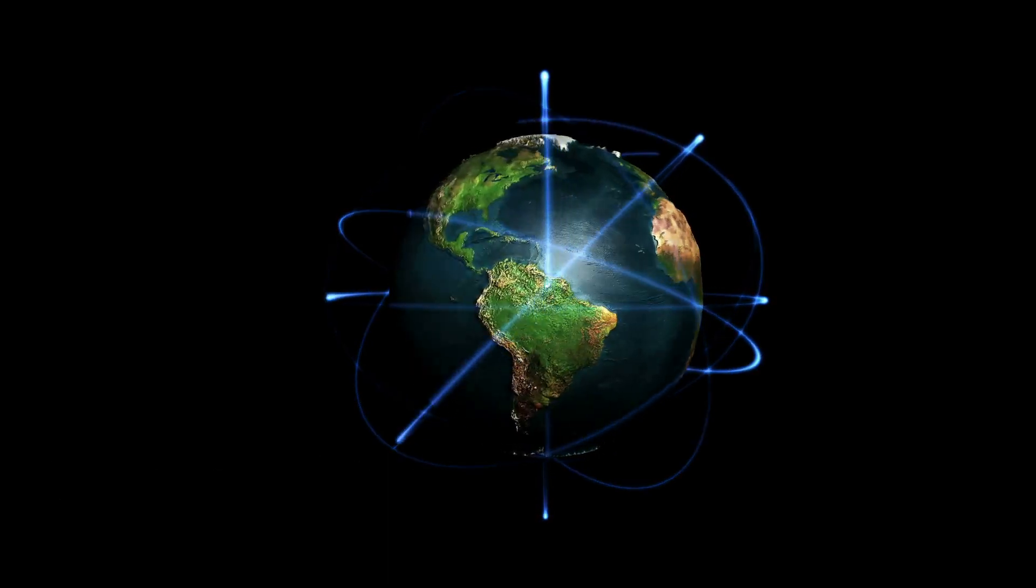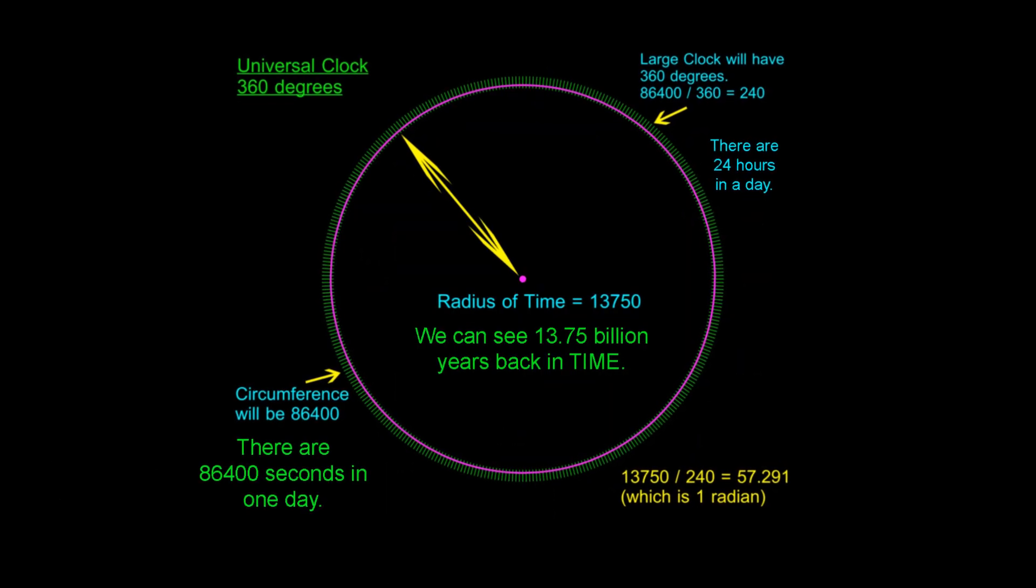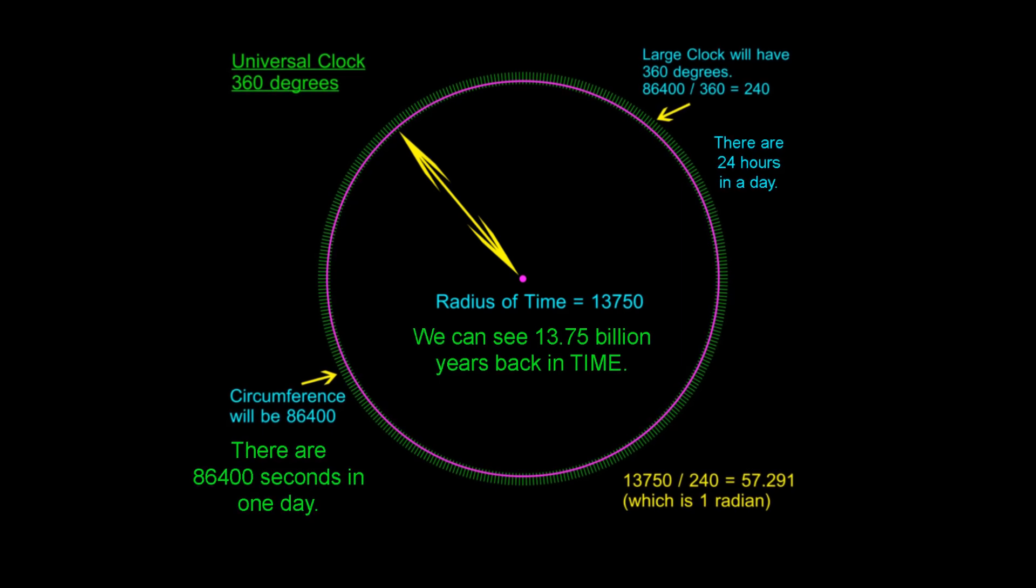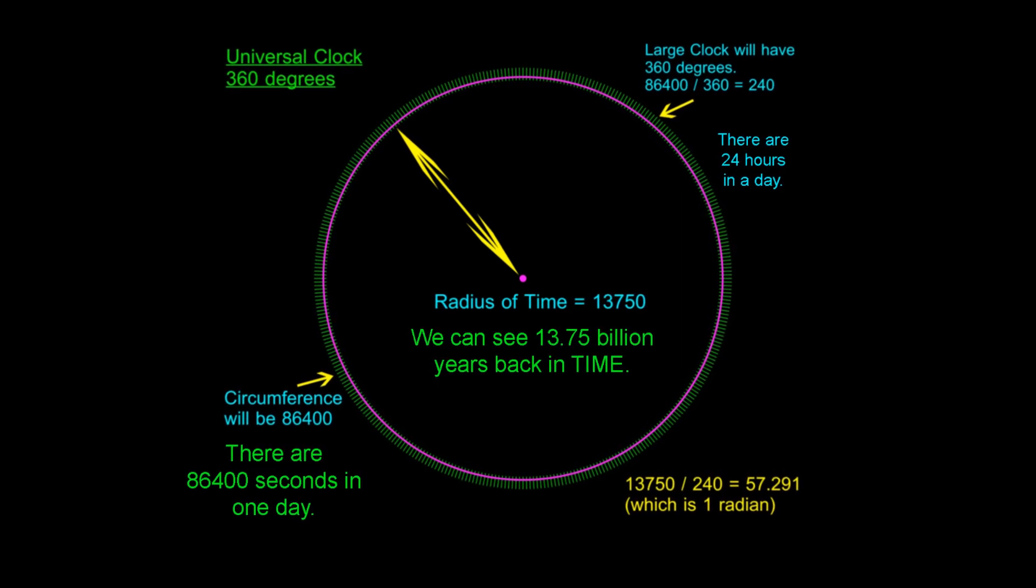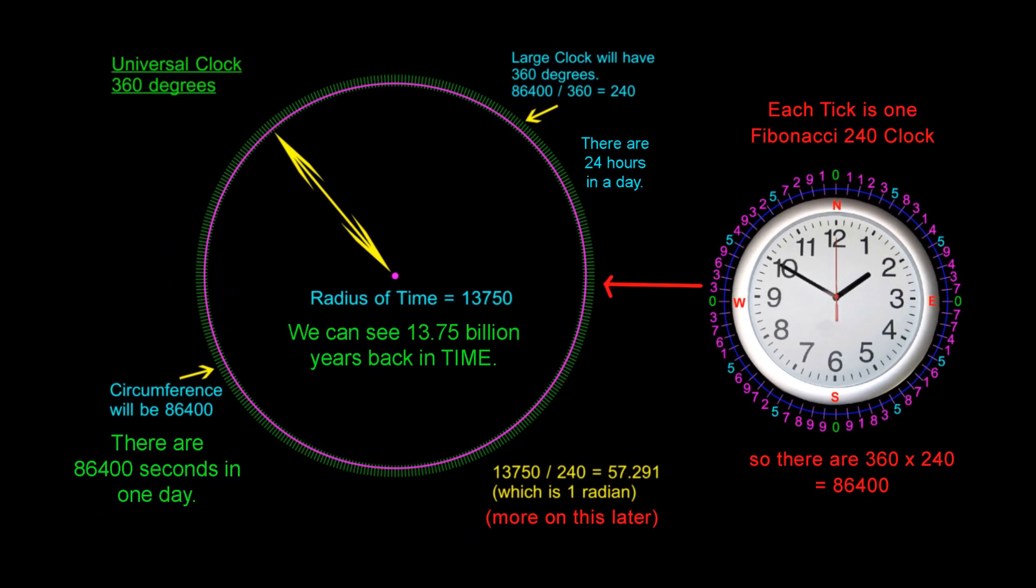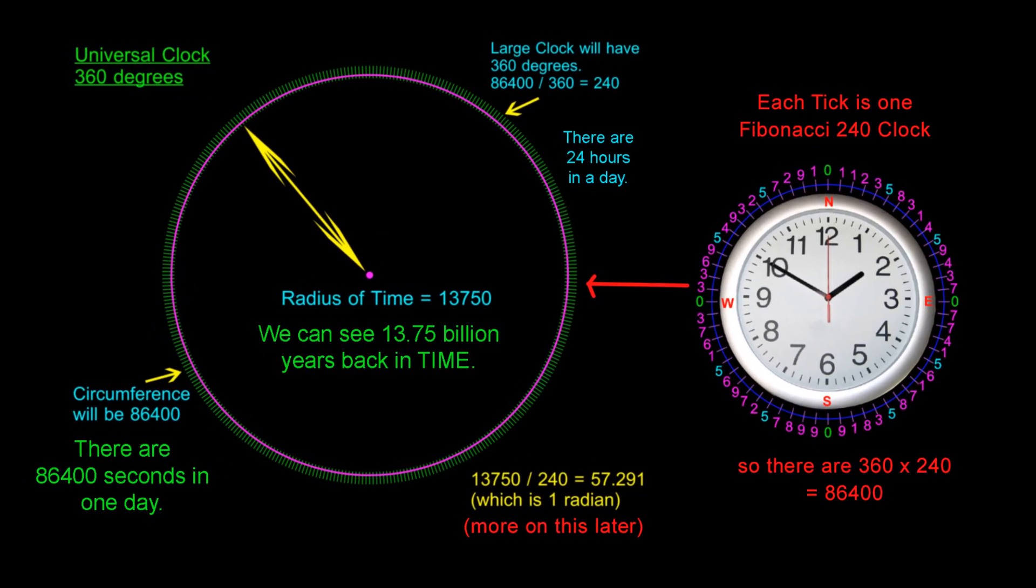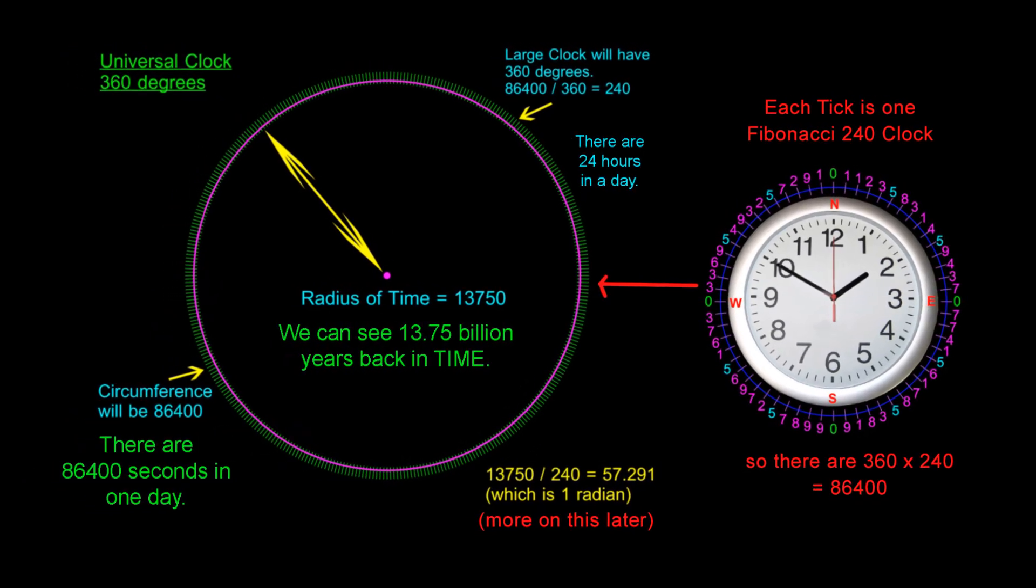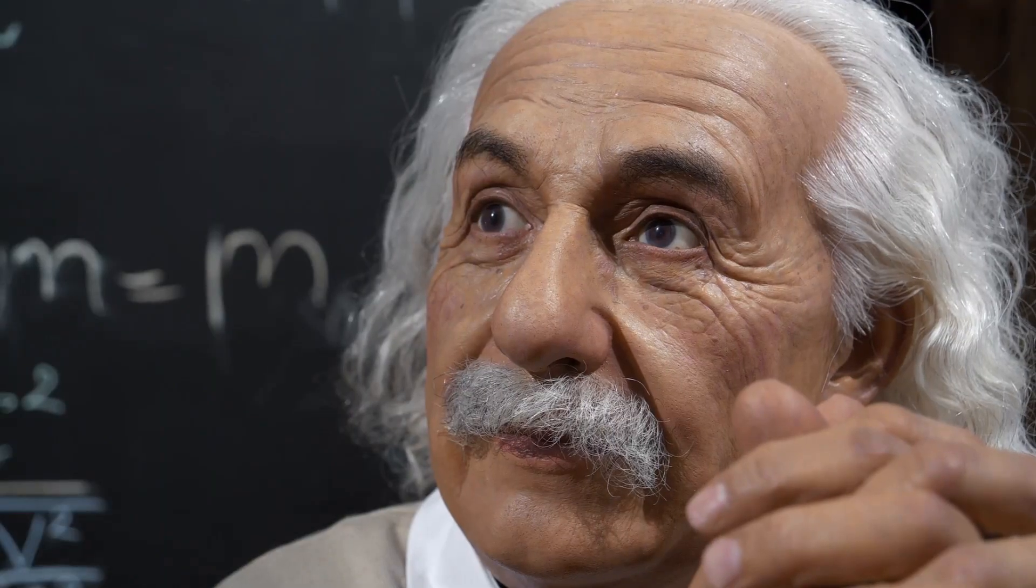As the Earth rotates on its central axis, it is creating a circle around us with a circumference value of 86,400 units. But bear in mind that that circle has no objective size. A second is only a second relative to us. There is no objective value of one second. As per Einstein, time is relative.